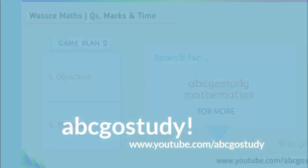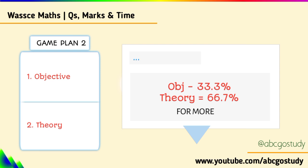Paper 1 is 33.3% of your total grade, and paper 2 is 66.7% of your total grade.